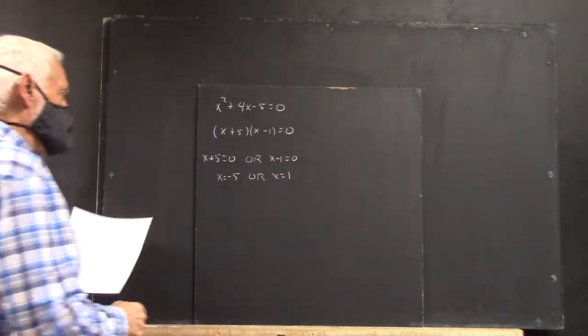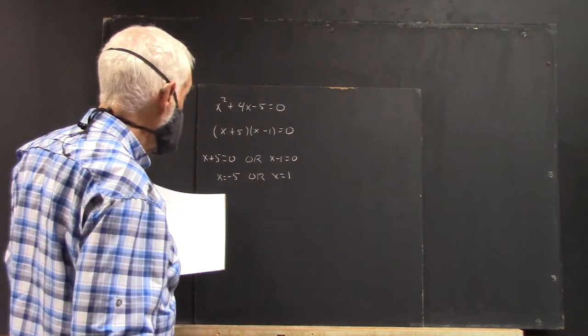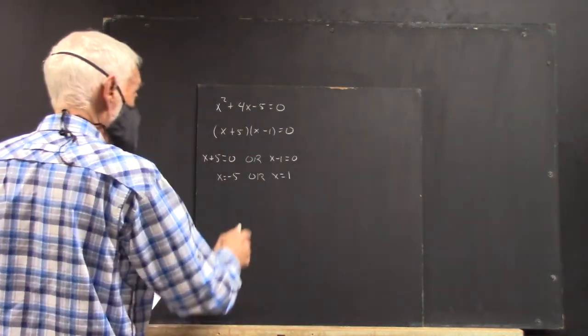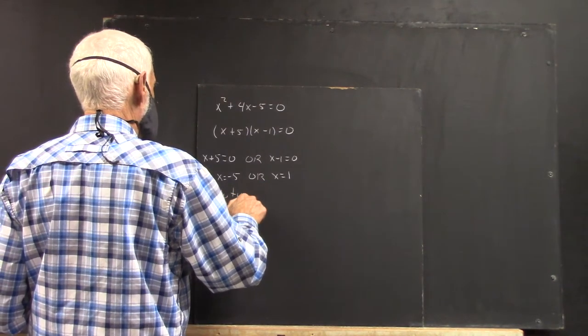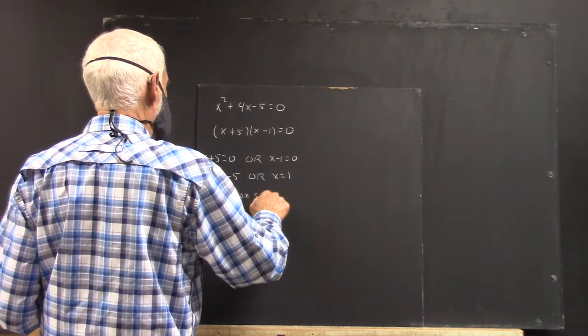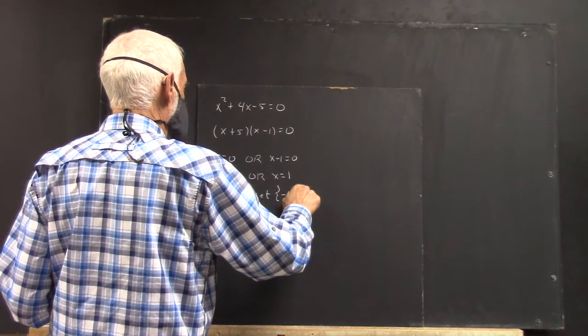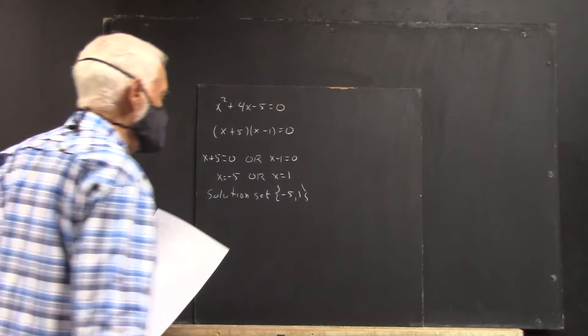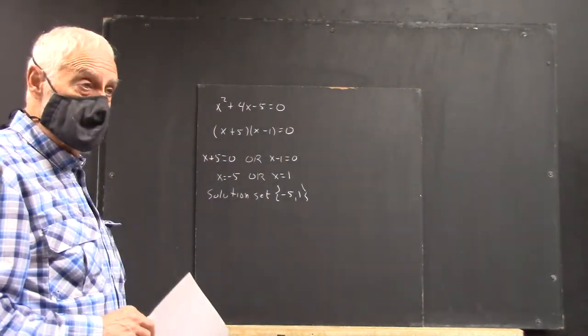And we usually solve both of these equations. Again, x equals negative 5 or x equals 1. And we could write the solution set as set negative 5, 1.